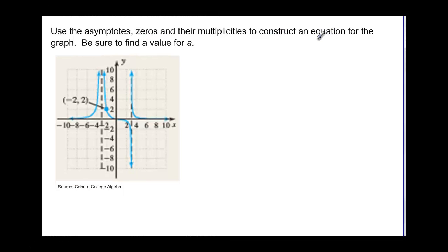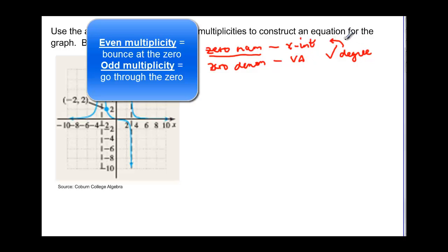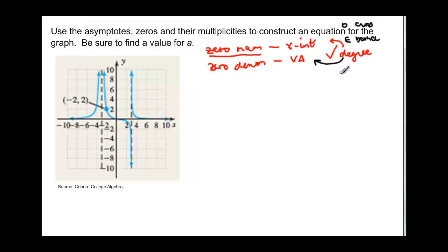Now we use the asymptotes, zeros, and multiplicities to construct an equation for the graph, and find a value for a. The zeros of the numerator give us the x-intercepts, and the zeros of the denominator give us the vertical asymptotes. For x-intercepts: even degree means the graph bounces; odd degree means it crosses. For vertical asymptotes: even degree means no sign change; odd degree means the graph does change sign.